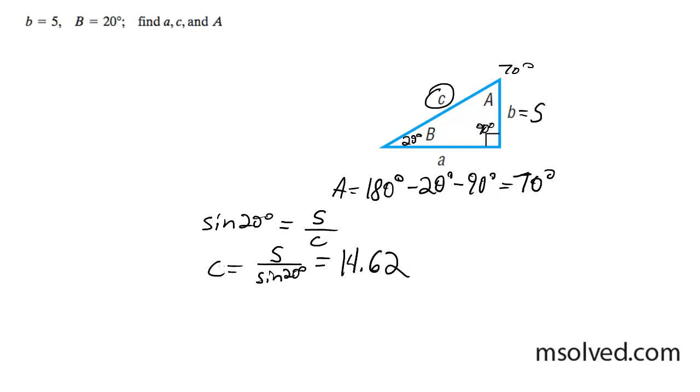Now that you have two sides, you can use the Pythagorean theorem since this is a right triangle. But in this case, I'm just going to use trig. It's a little quicker. So sine of 70 degrees is equal to a divided by 14.62.